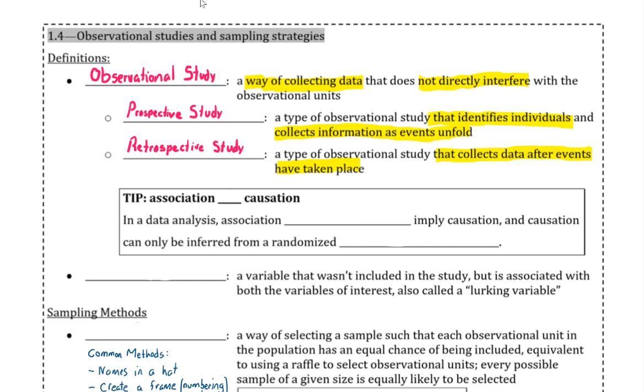As we're looking through the different examples in section 1.4, keep in mind that association is not the same as causation. In data analysis, association does not imply causation. Causation can only be inferred by a randomized experiment. When we're looking at our examples, it's important to remember that for these observational studies, we can only say that we see an association between two variables and not that one variable causes another.